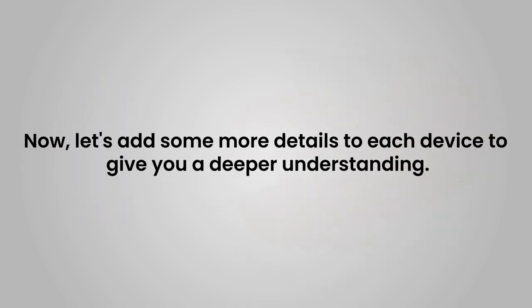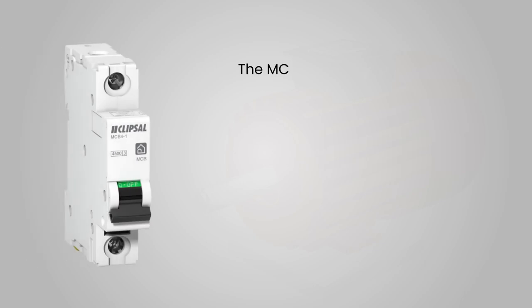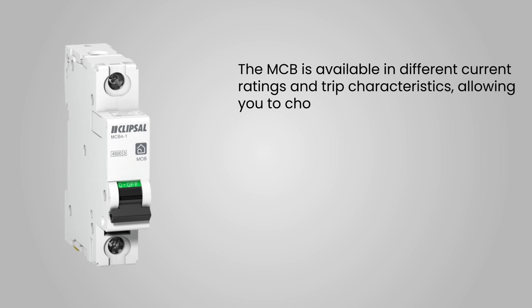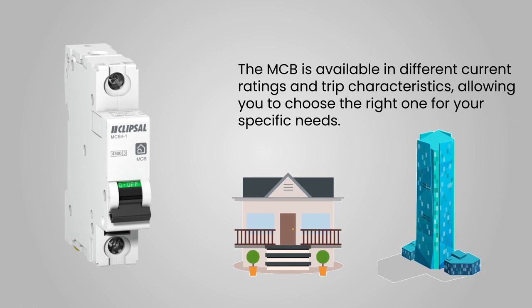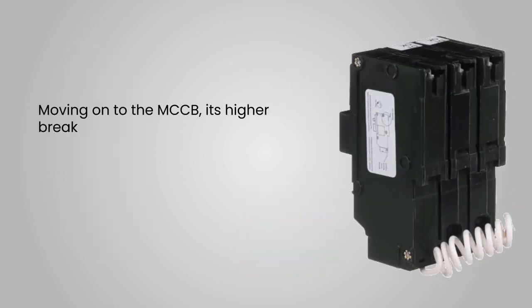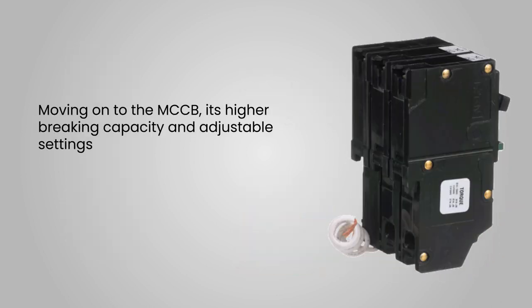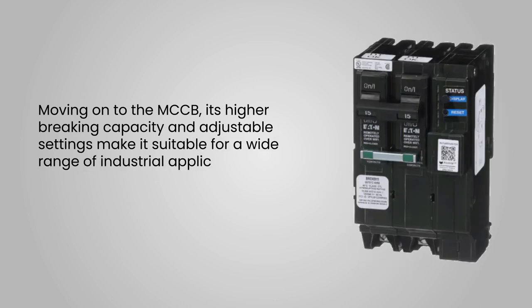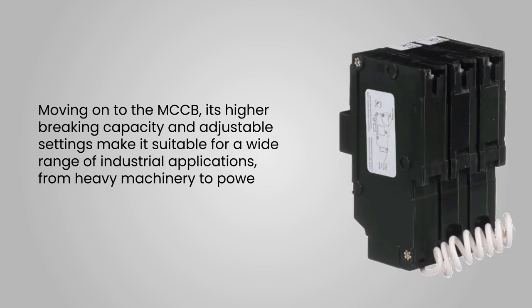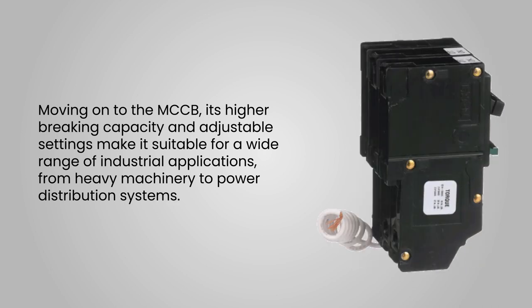Now let's add some more details to each device. The MCB is available in different current ratings and trip characteristics, allowing you to choose the right one for your specific needs. It's a reliable and cost-effective solution for protecting circuits in homes and small commercial setups. The MCCB's higher braking capacity and adjustable settings make it suitable for a wide range of industrial applications, from heavy machinery to power distribution systems.